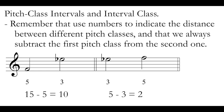A quick review of pitch class intervals: we're using numbers to indicate the distance between different pitch classes, and we're always subtracting the first pitch from the second one to find our pitch class interval. Here I've got a 5 going up to a 3 — an F going up to an E-flat — and I can use mod 12 to help me subtract. I'll add 12 to that 3: 15 minus 5 is 10. And on the other side, we've got the inversion — switching the order, 5 minus 3, to give us the pitch class interval of 2. This is something we already talked about in video one, measuring these pitch class intervals.